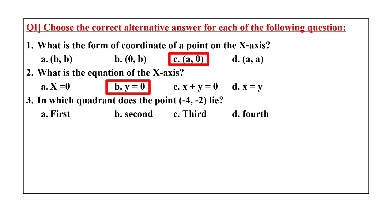The third question is: in which quadrant does the point (-4, -2) lie? The x-axis and y-axis divide the plane into four quadrants. If both the x and y coordinates are negative, the point falls in the third quadrant. So the correct answer is C, third quadrant.